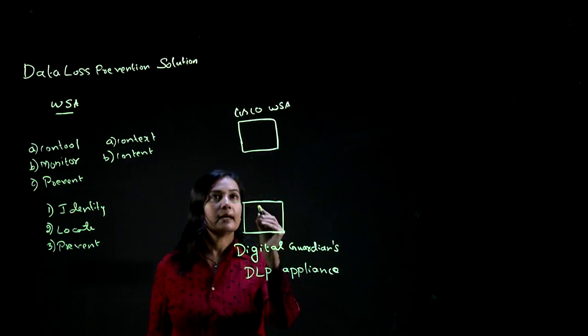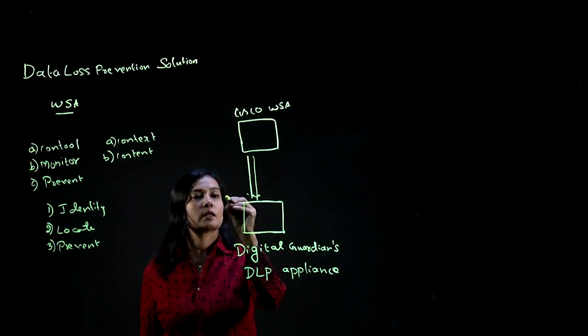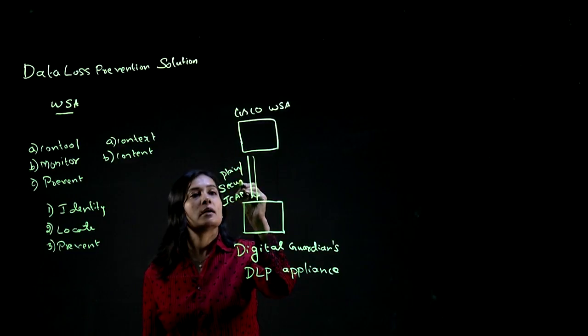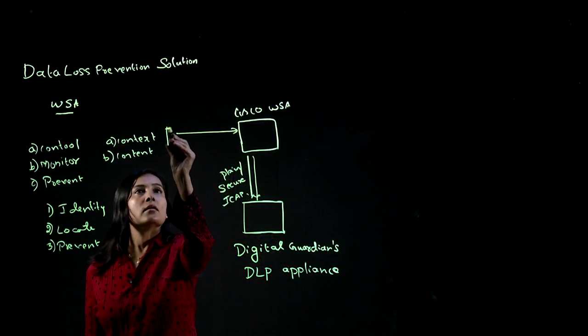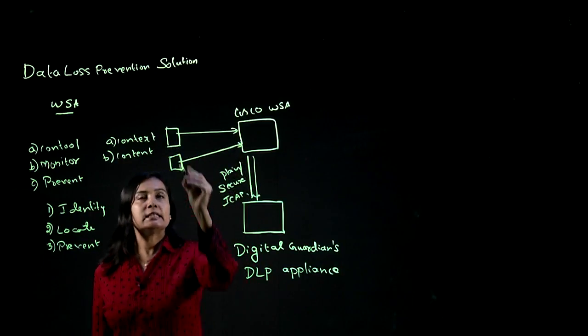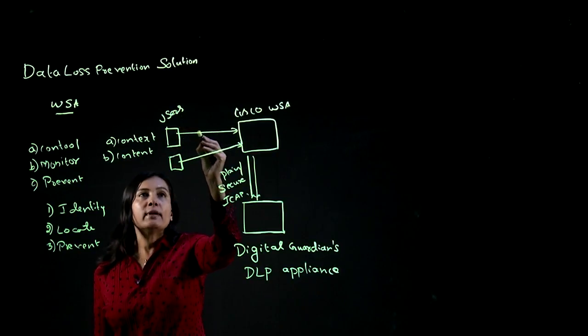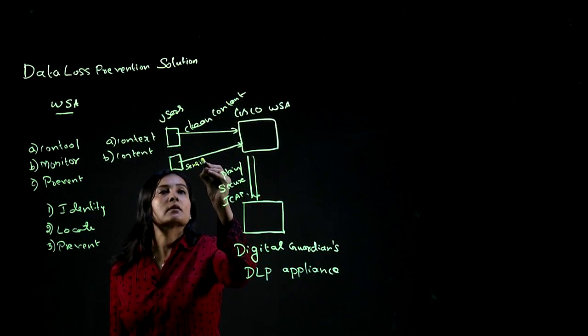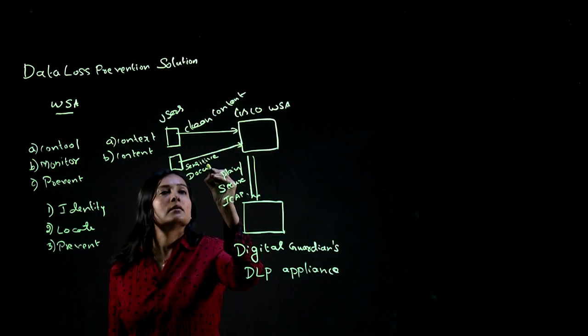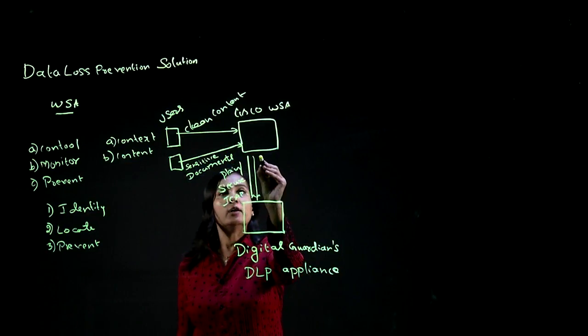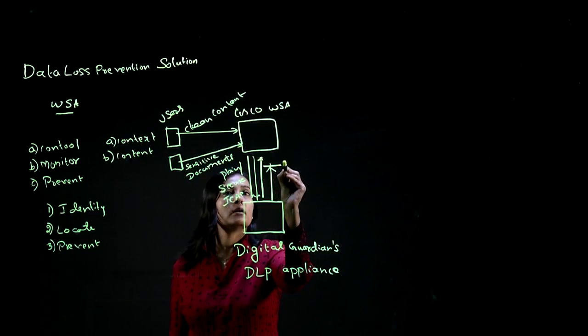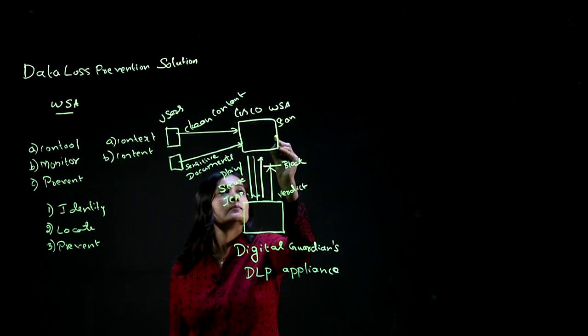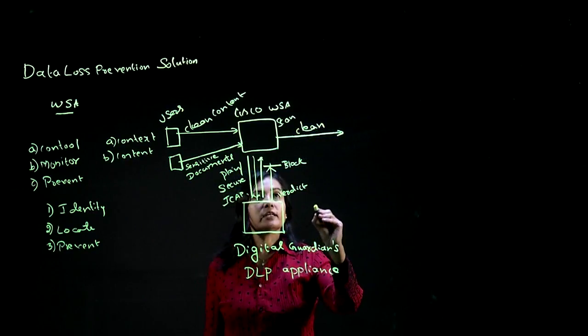Using ICAP, that is Internet Content Adaptation Protocol. It can be plain or secure. Here users send their HTTP, HTTPS or FTP traffic that may have clean content or it may have sensitive documents. So customers can allow or block the traffic based on the configured rules and policies.